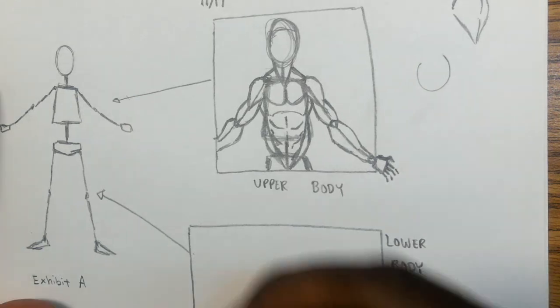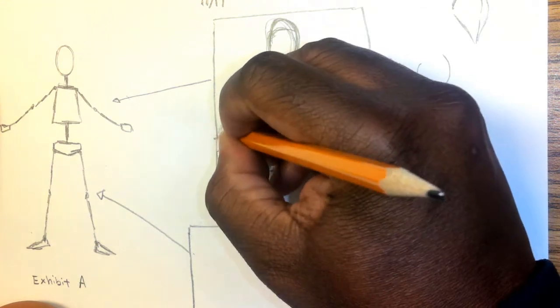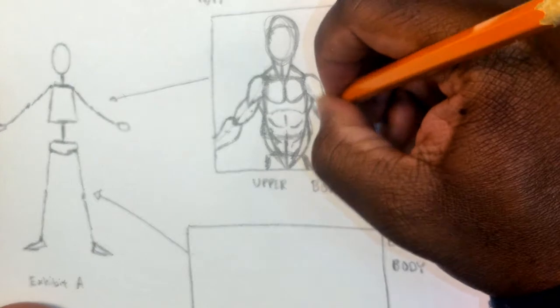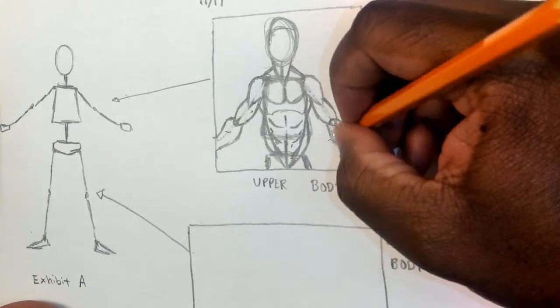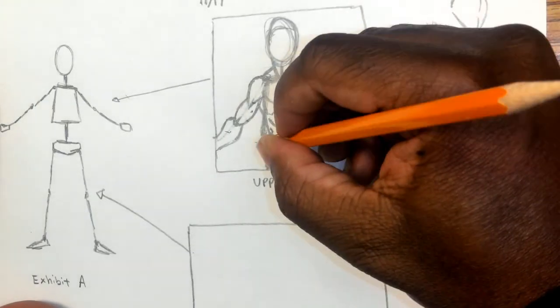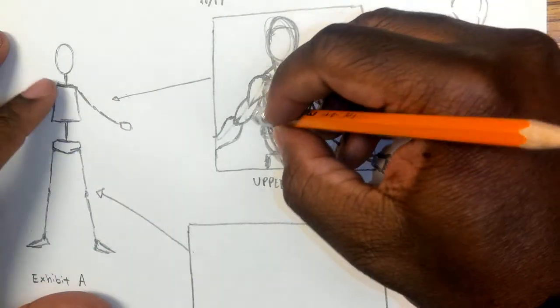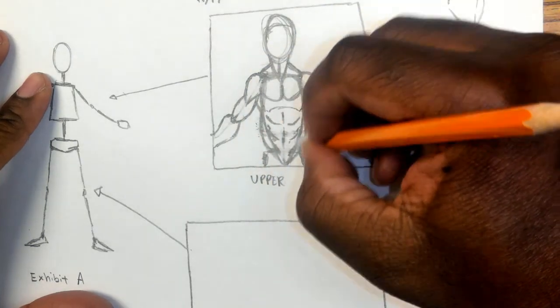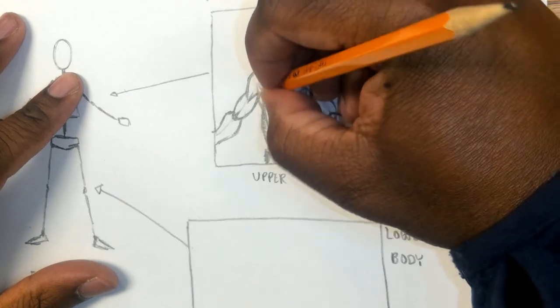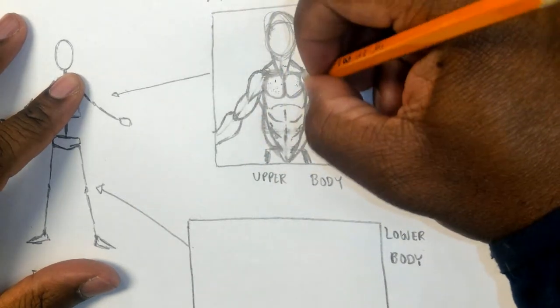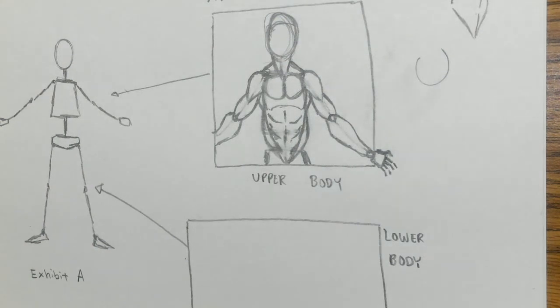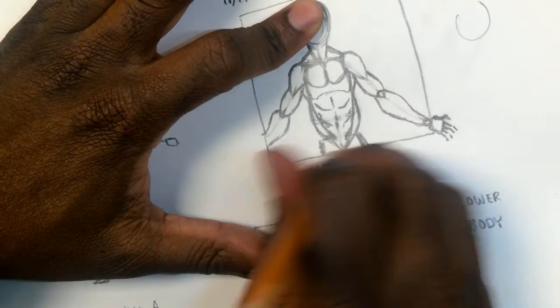And then the important part, once you have these down, go ahead and erase the parts of your basic-shaped skeleton that you can see. It's most important to do that because you don't want these lines to start confusing you.